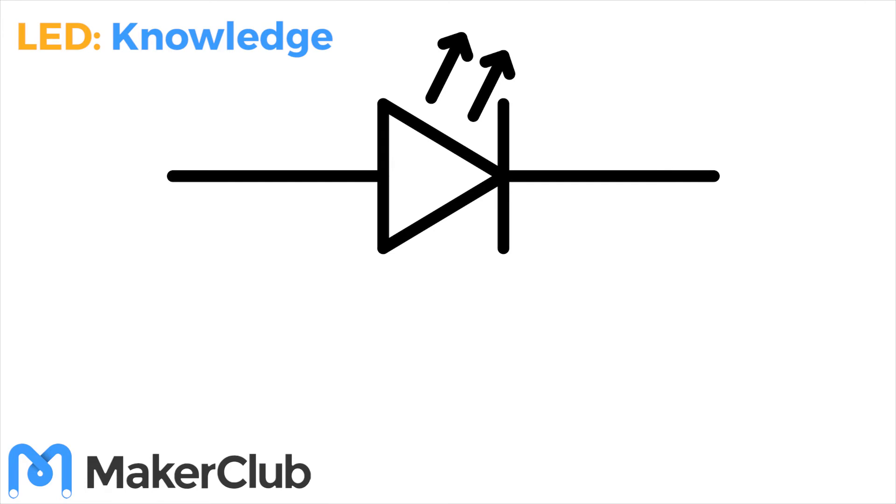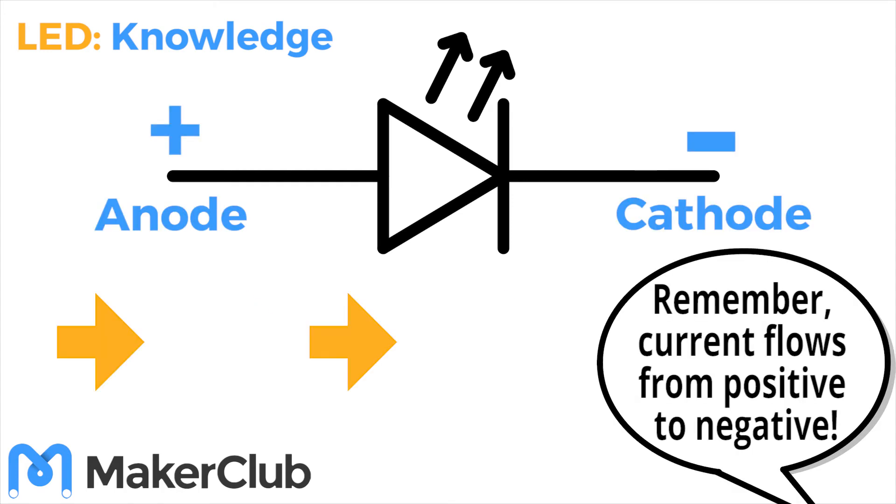So think about the circuit symbol for LED. If the current flows in the direction of the arrow, which side of the symbol is the anode or positive leg and which side is the cathode or negative leg? Did you get it right?